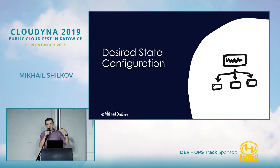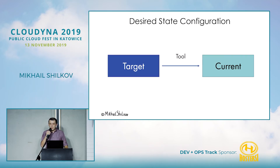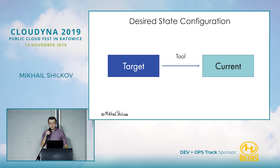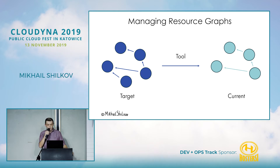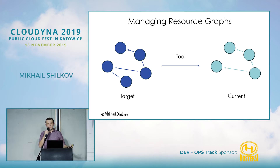Coming back to the previous generation of tools, you can apply the idea of desired state configuration to cloud resources. In this case, you care about describing the target state of your environment, and it's the job of the tool to figure out what exact steps are needed to bring it from current configuration to the target configuration. Both sides actually operate on graphs of resources — each node is one resource, and the edges are dependencies between them. Dependencies define order and what can or cannot be done.